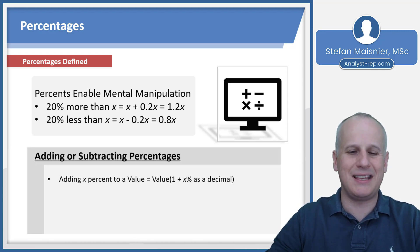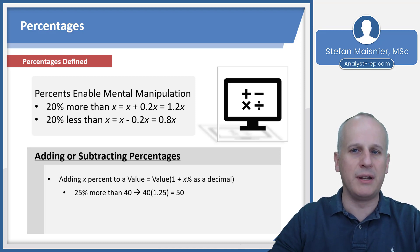You can add percentages by taking the value and multiplying it by 1 plus that x percent as a decimal. For instance, 25% more than 40 will be 40 times 1.25, which becomes 50. You can do that math in different ways - you can do 4 times 12.5 if you remove one zero from 40 and shift the decimal. You can also make 1.25 into 5 fourths, and 40 divided by 4 gives you 10 times 5 gives you 50.